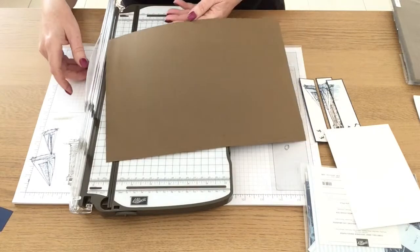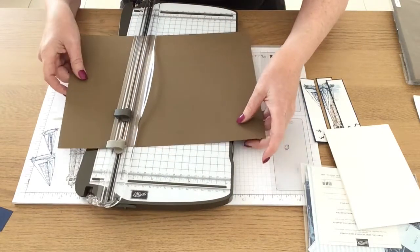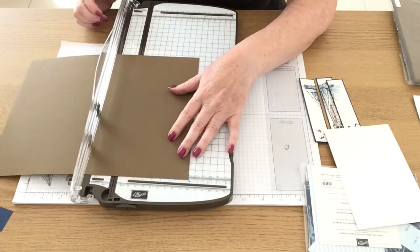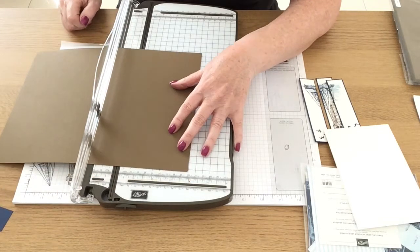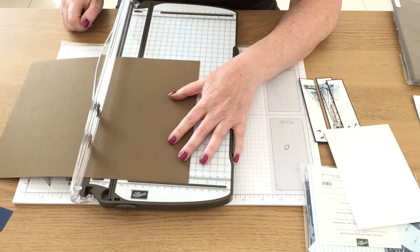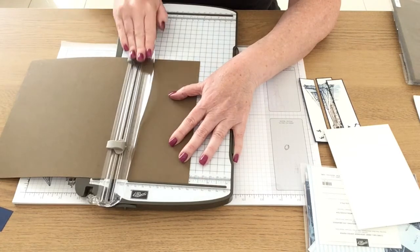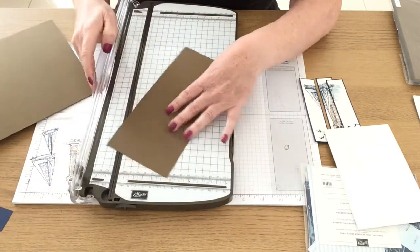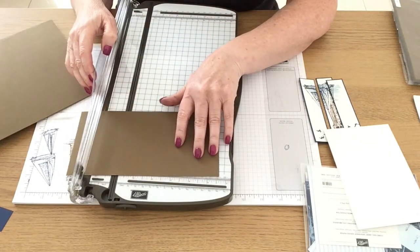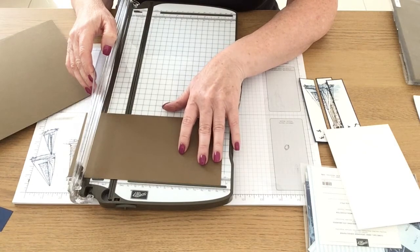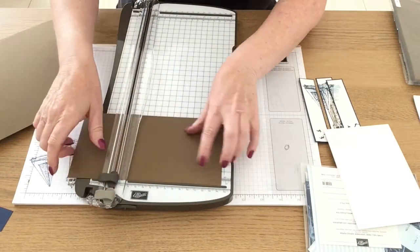I'm going to use a piece of soft suede and this is going to be cut at four inches by five and five-eighths. So this is one-eighth smaller on the width and the length than my actual white base.